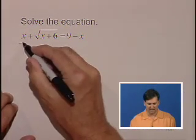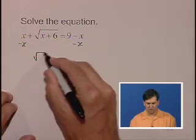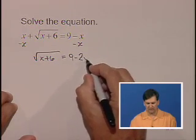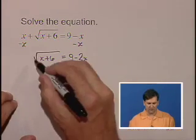So I'm going to subtract x from both sides and get the square root of x plus 6 is equal to 9 minus 2x. Now we can square both sides.